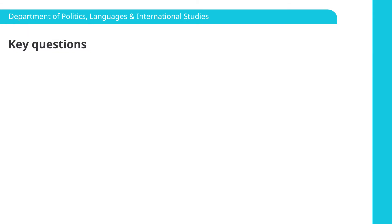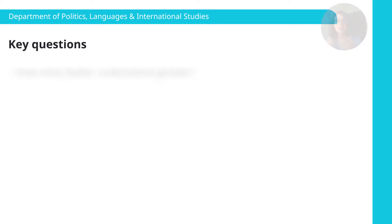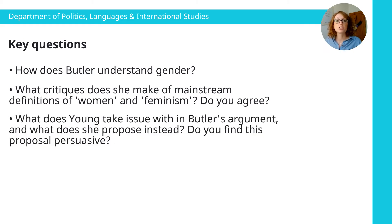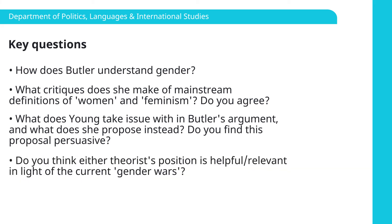Just to leave you with some questions to have in your mind as you're doing the reading for this week's seminar: How does Butler understand gender, and what's her contribution to understanding it? What critiques is she making of mainstream definitions of women and feminism, and do you agree with these critiques? What does Young take issue with in Butler's argument, and what does she propose instead? Do you think this is persuasive? Which argument do you buy into more — Butler or Young? And lastly, do you think either theorist's position is helpful or relevant in light of the current politics around gender? Thank you for taking the time to watch the lecture today. I hope you find it useful. If you would like any further information about the university, please visit our website.